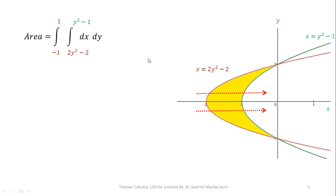First of all, we will integrate the inner variable. The integration of dx is x for the limits 2y² - 2 to y² - 1. In the next step, we will apply upper limit minus lower limit. And then after simplification, we have -y² + 1.